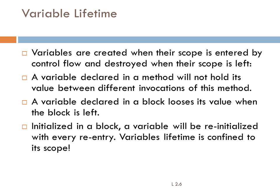Variable lifetime: variables are created when their scope is entered by the control flow and destroyed when their scope is left. When we enter a block that contains a variable, that variable will be created; when control exits the block, the variable is automatically destroyed. A variable declared in a method will not hold its value between different invocations of the method. When we call a function, the variable is created; when control returns, the variable is destroyed. A variable initialized in a block will be re-initialized with every re-entry.